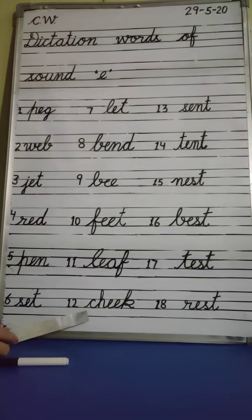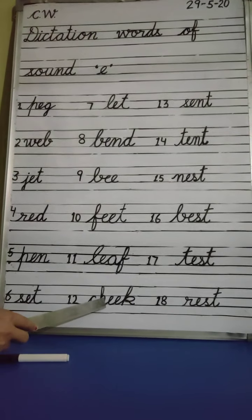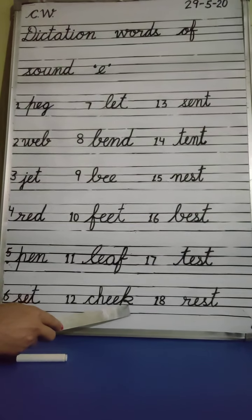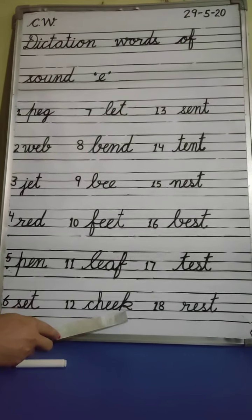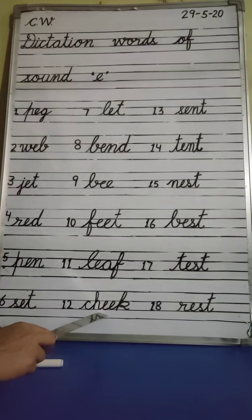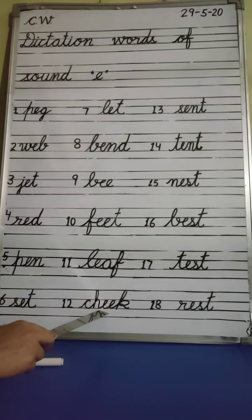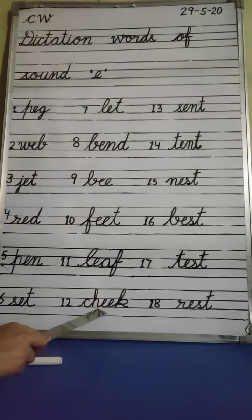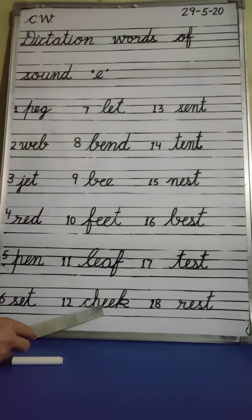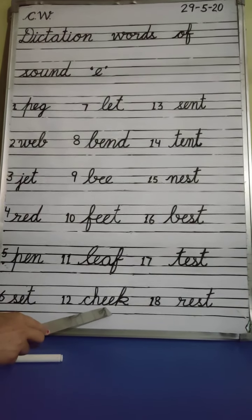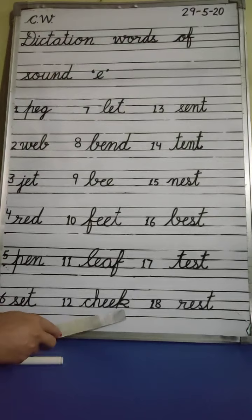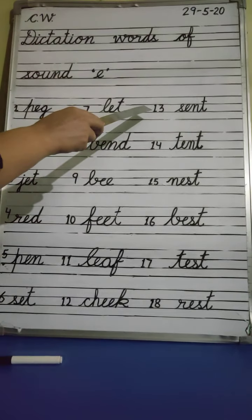Number 12. C, H, double E, K — Cheek. Cheek means gaal. Okay, it is our body part. C, H, double E, K — Cheek. Okay, next.